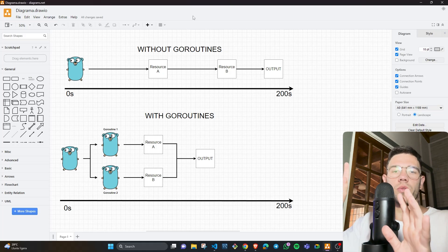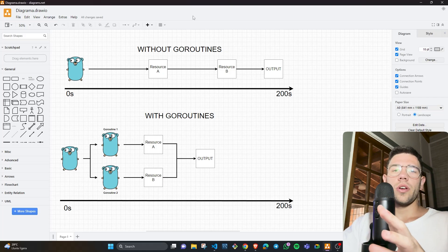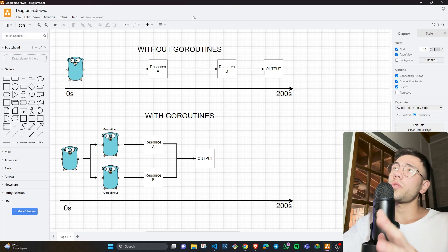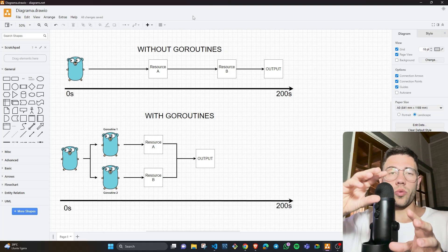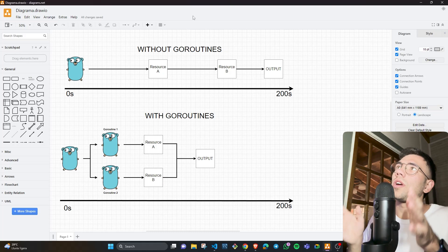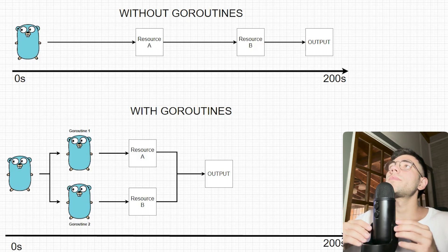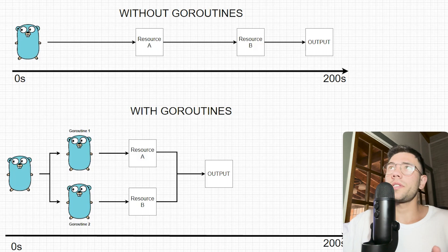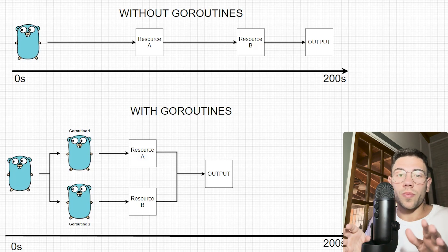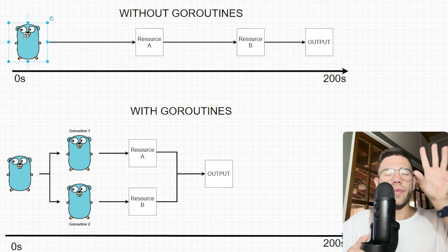First, we have a diagram where I try to show you some examples of programs that need resources, and how to get those resources in a sequential way versus with concurrency. We have a main program — in this case in Golang, but it could be any programming language — and first a program without goroutines. This program needs two resources: resource A and resource B.